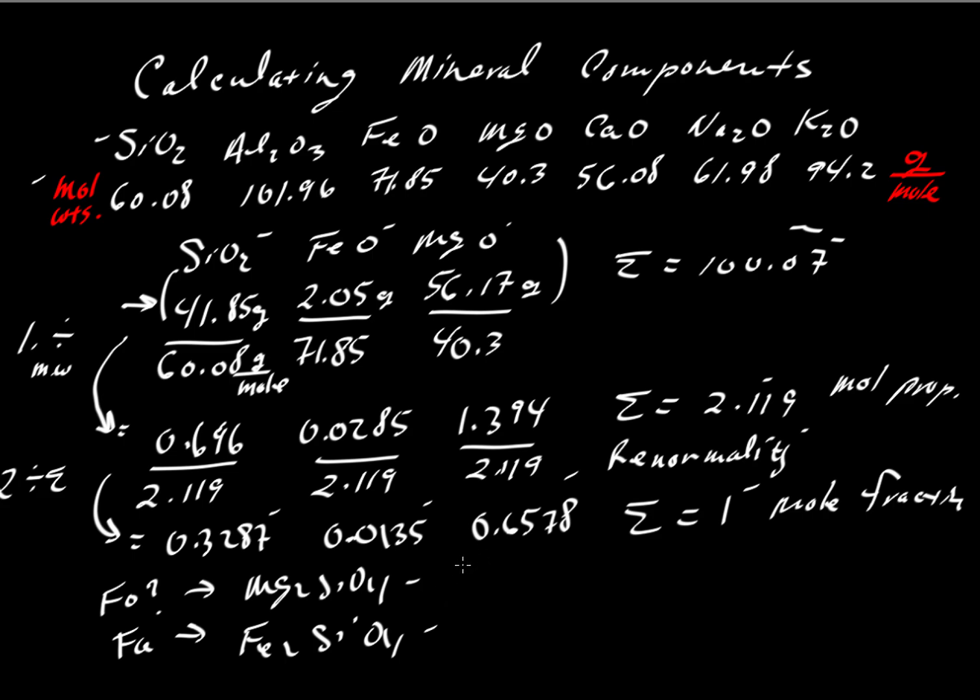So how would we calculate the combination? Well, it's pretty simple. Let's erase the chalkboard. Now, we're going to have to keep in mind these numbers here. We're going to have to remember 0.6578 for MgO and 0.0135 for iron.